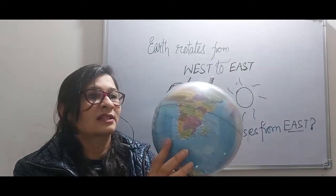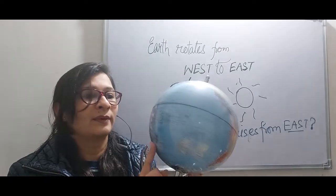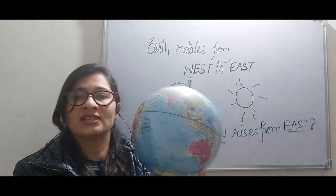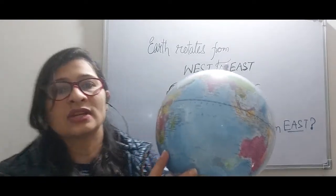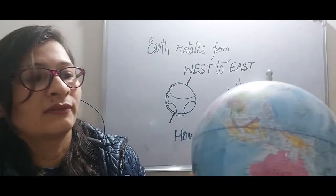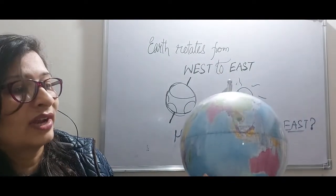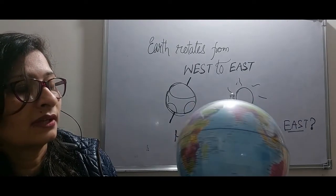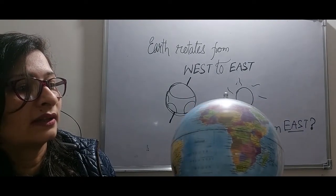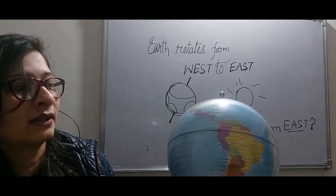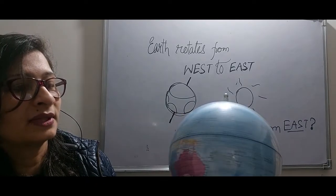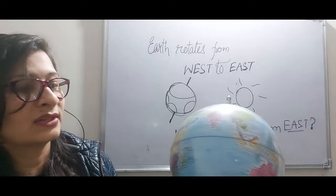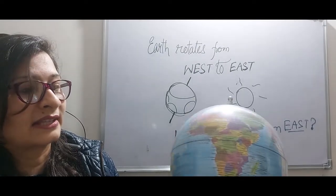It rotates on its axis, and it rotates from west to east. Now, if you just look carefully, this is our India, right? So when it is rotating like this, this is how Earth is rotating continuously on its axis.